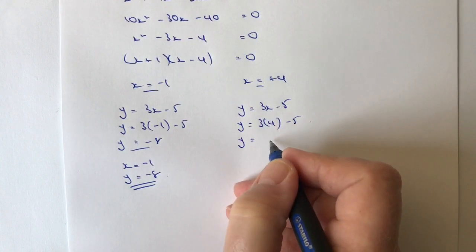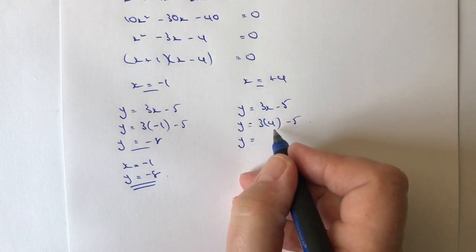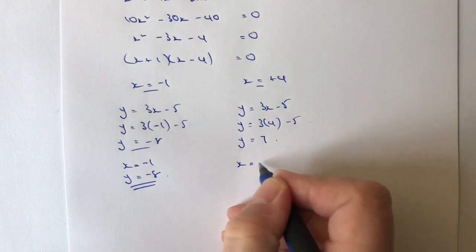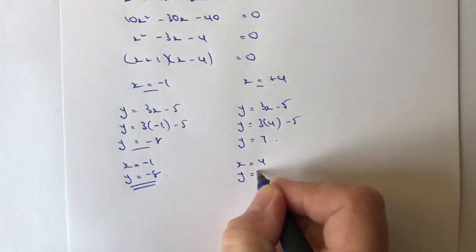So therefore, y must equal 3 times 4 is 12. 12 minus 5 is 7. So when x equals 4, y equals 7.